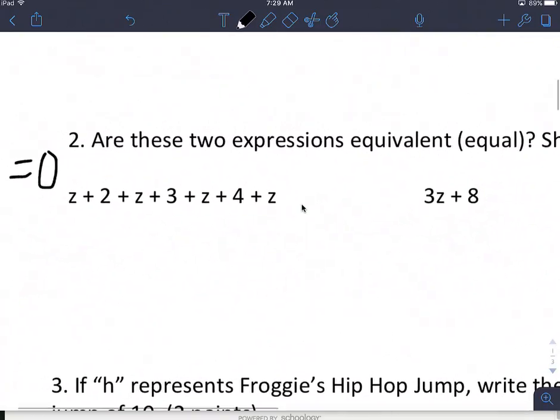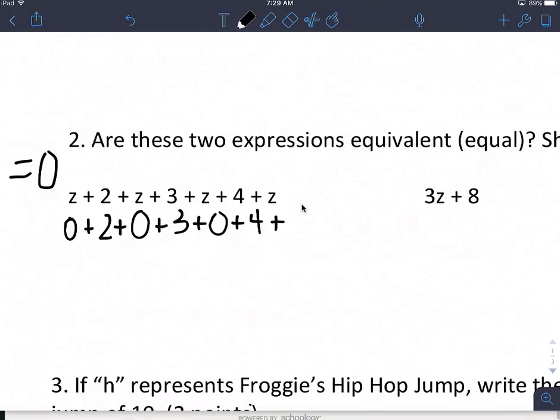So I'm going to start here. Anytime I see z, I'm going to plug in 0. So this is going to become 0 plus 2 plus 0 plus 3 plus 0 plus 4 plus 0. So really, we have 2 plus 3 plus 4. 2 plus 3 is 5, plus 4 is 9.